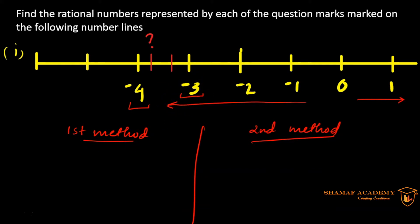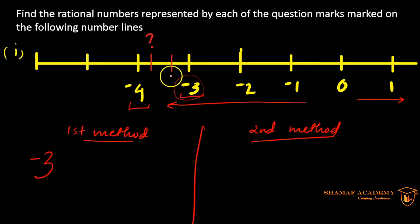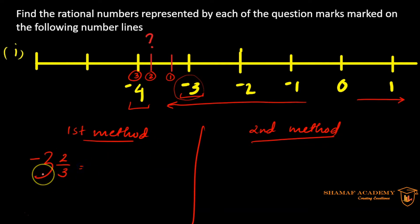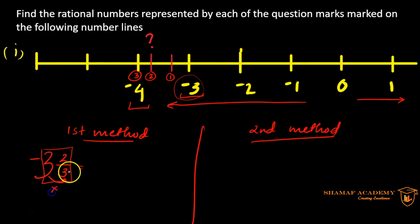In the first method, we make a mixed fraction. The main number we start from is negative 3, so I write negative 3. Now look at the divisions — this part of the number line is divided into 3 parts, and the number we need is the 2nd division out of 3, so we write 2/3. Converting this mixed fraction: 3 times 3 is 9, plus 2 is 11, giving us negative 11/3. That's our answer.